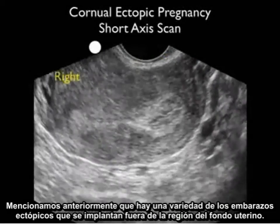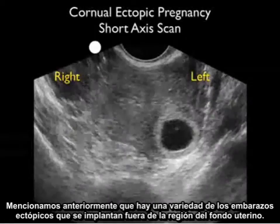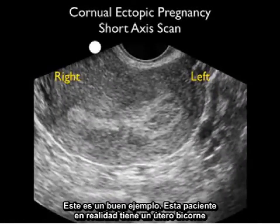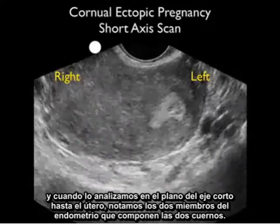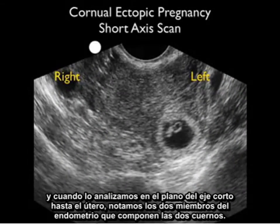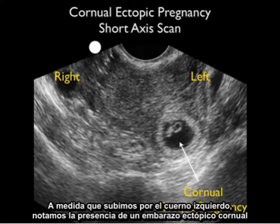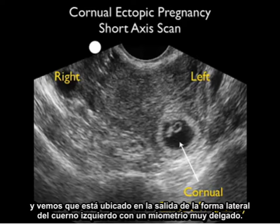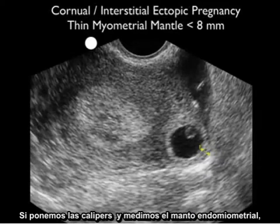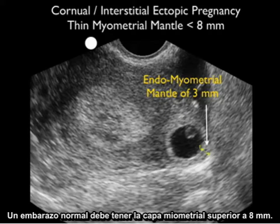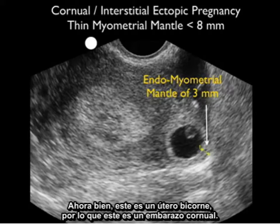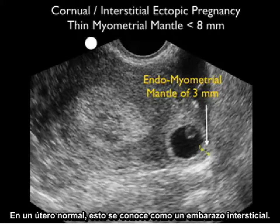There are variants of ectopic pregnancies that implant outside the fundal region of the uterus in an aberrant location. This patient has a bicornuate uterus, and as we scan in a short axis plane up the uterus, we notice the two limbs of endometrium making up the two distinct cornua. As we go up the left cornua, we notice the presence of a corneal ectopic pregnancy located way out to the left cornua with a very thin myometrial mantle. Measuring the endomyometrial mantle, we find it's very thin at three millimeters, defining an abnormal pregnancy — a normal pregnancy should have a myometrial mantle greater than eight millimeters. In a normal uterus, this would be known as an interstitial pregnancy.